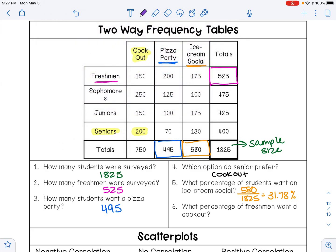And then we want to know what percentage of freshmen want a cookout. So the total number of freshmen that want a cookout is 150 divided by the total number of freshmen, which is 525. So 150 divided by 525 multiplied by 100 is 28.57 percent.